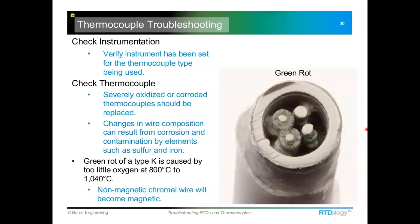Other issues with thermocouples include making sure your instrumentation is set to the correct thermocouple type. The most common base metal thermocouples are types J, K, T, and E. Each one has a different temperature-to-millivolt relationship, so you need to make sure the settings are correct in your transmitter or signal conditioning equipment to accept that type thermocouple.